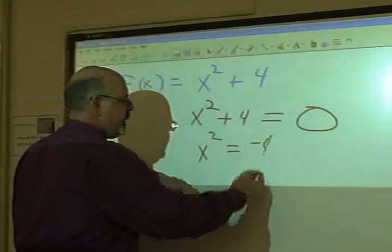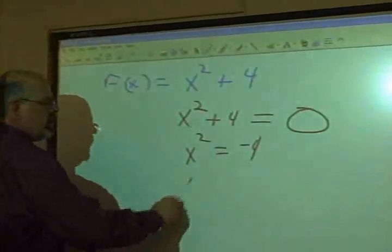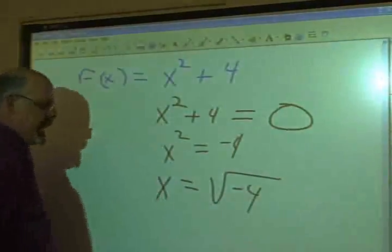You go x squared equals negative 4, x equals the square root of negative 4. Stop.